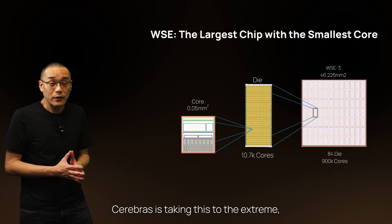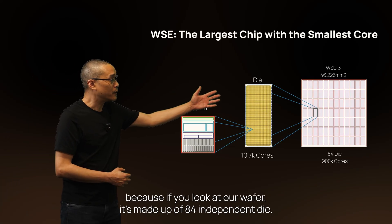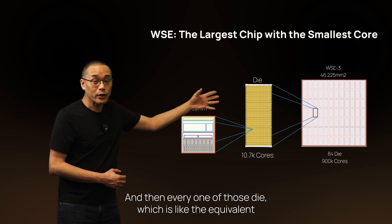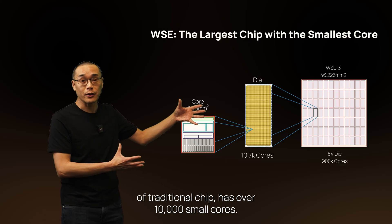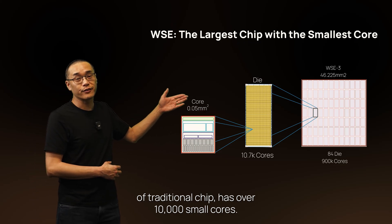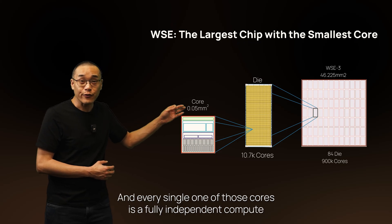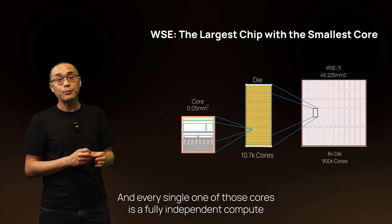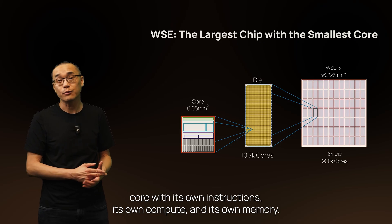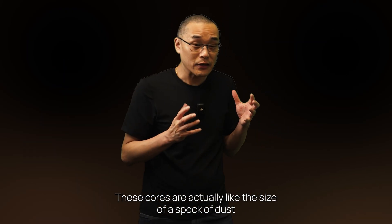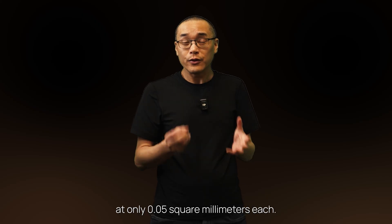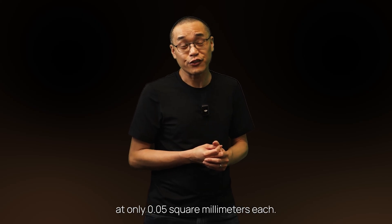Cerebrus is taking this to the extreme because if you look at our wafer, it's made up of 84 independent die, and every one of those die — which is like the equivalent of a traditional chip — has over 10,000 small cores. Every single one of those cores is a fully independent compute core with its own instructions, its own compute, and its own memory. These cores are actually the size of a speck of dust, at only 0.05 square millimeters each.